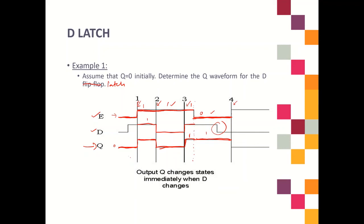In the last segment, E changes to 1 again. When E equals 1, Q will follow D. Starting from here, D is equal to 0, so Q also equals 0. This is how you draw the D latch waveform — output Q changes immediately when D changes, but you still need to refer to the E value.